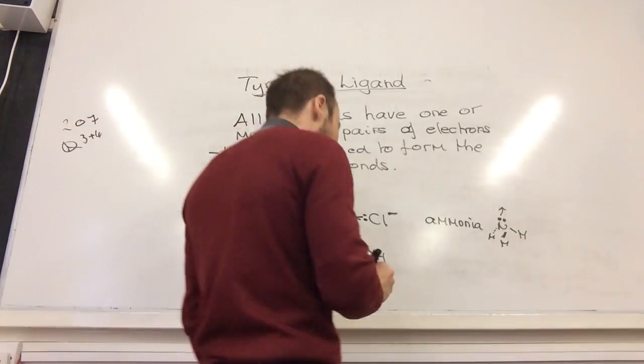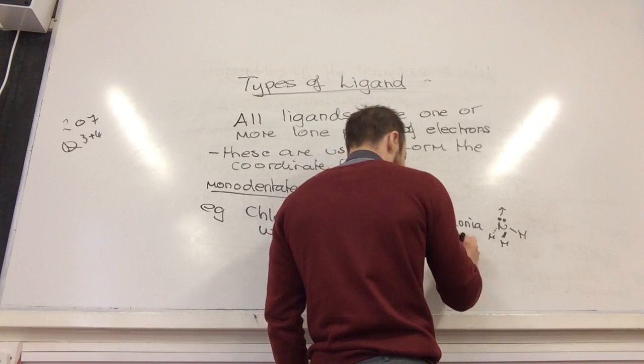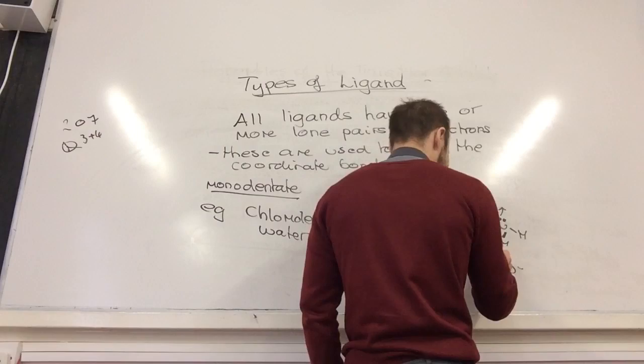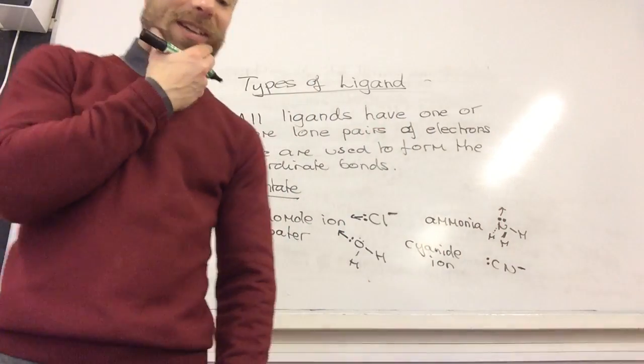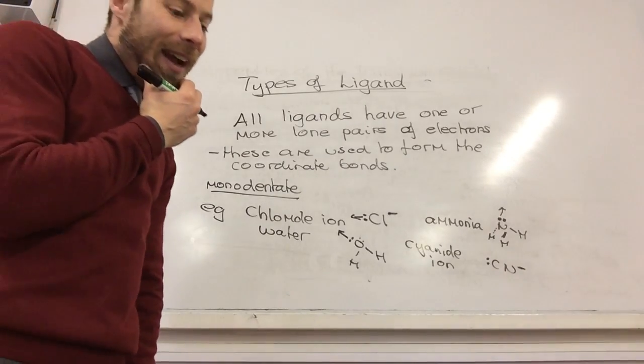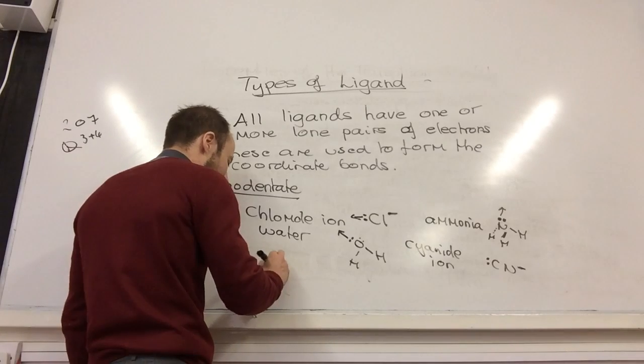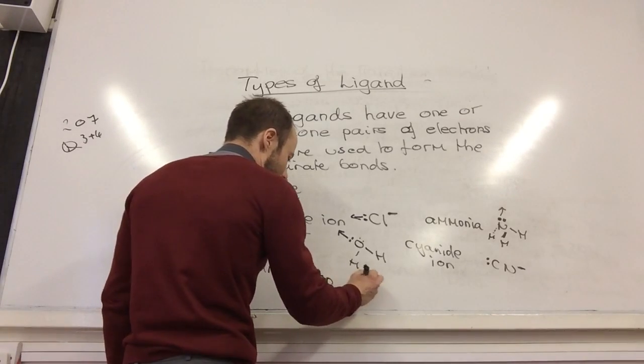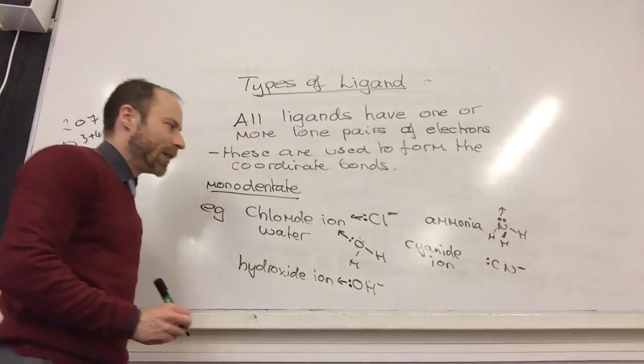Another interesting one is actually the cyanide ion. Cyanide ion there. And another, the final one that we'll do, is the hydroxide ion. OH⁻, it's got a lone pair of electrons on the oxygen.